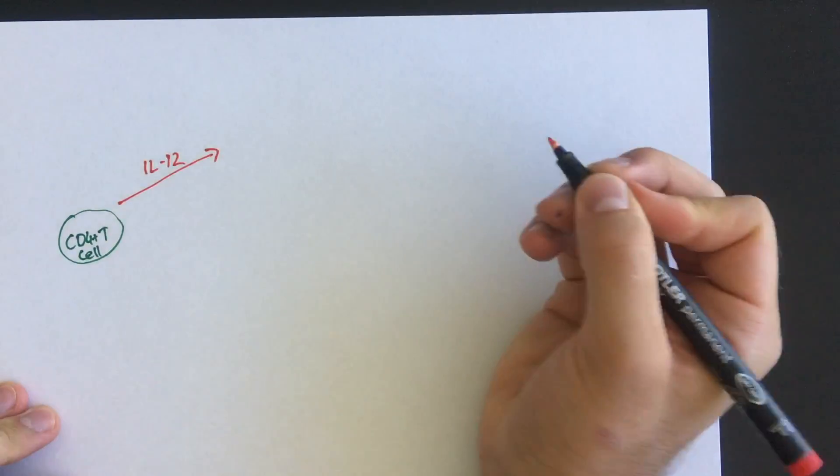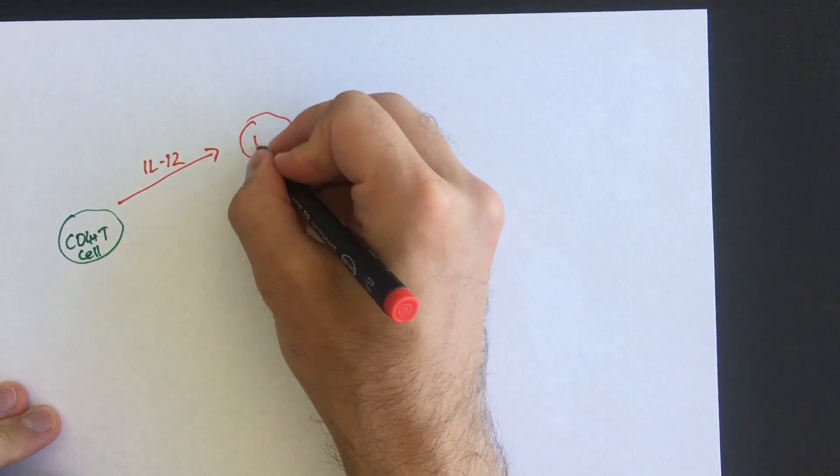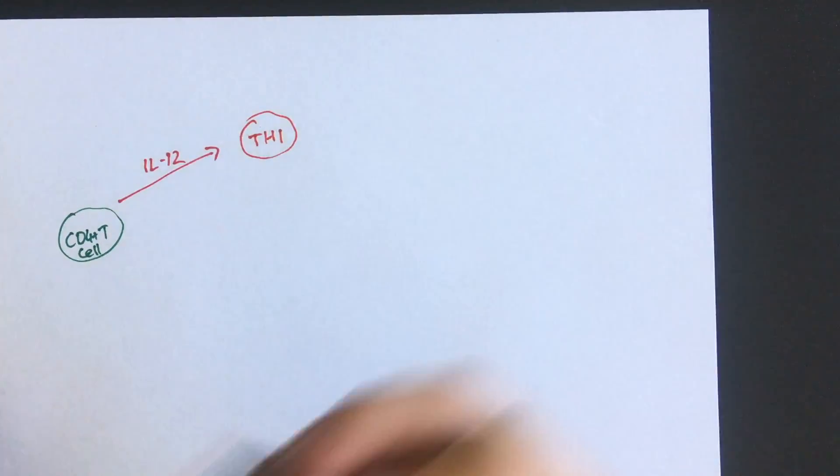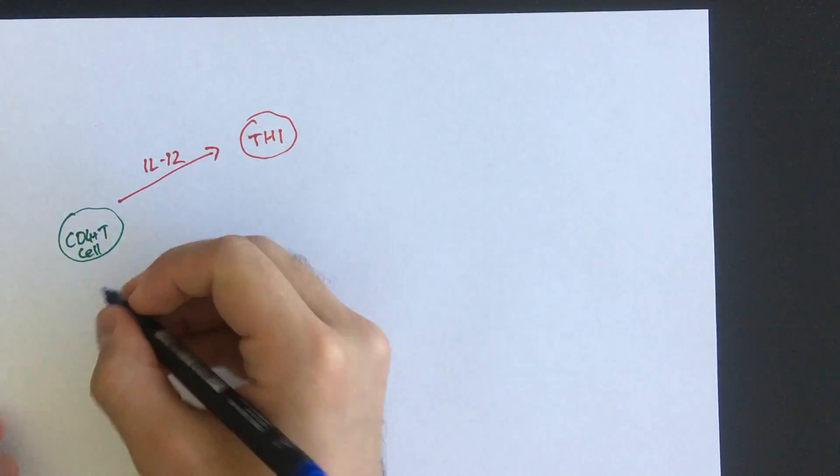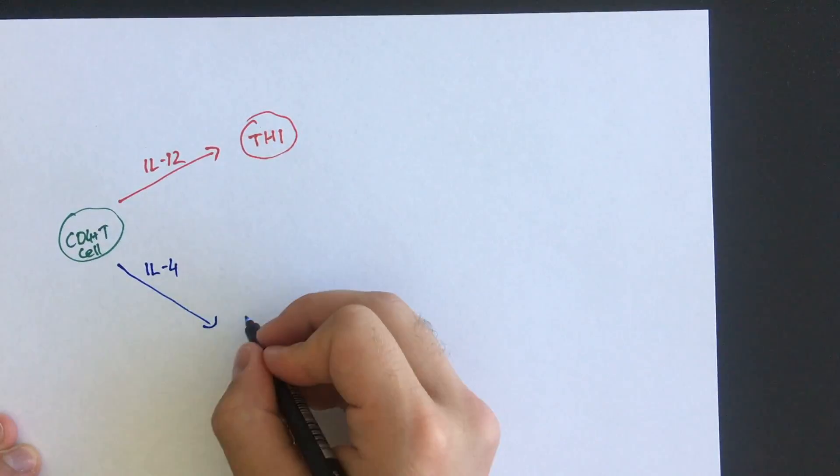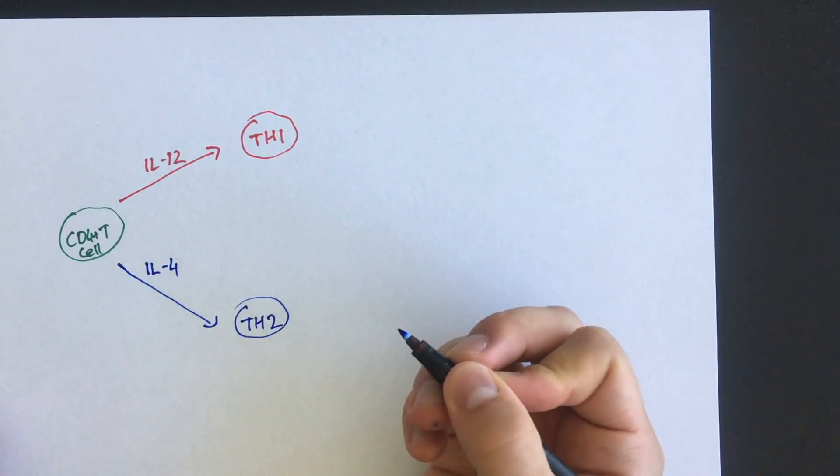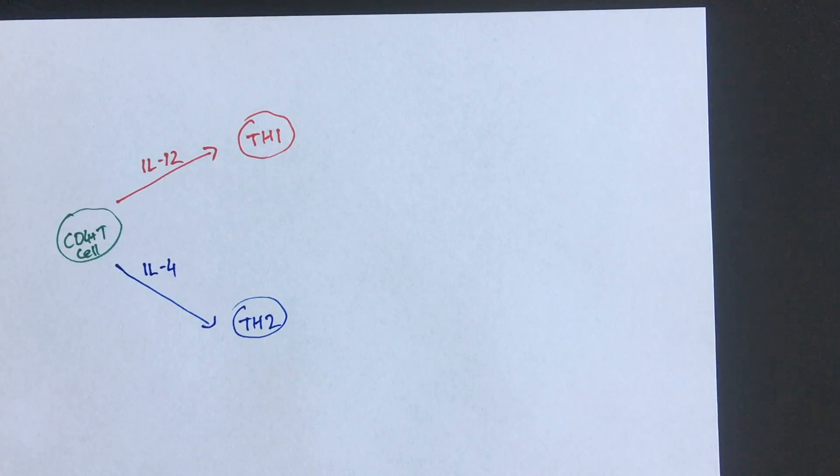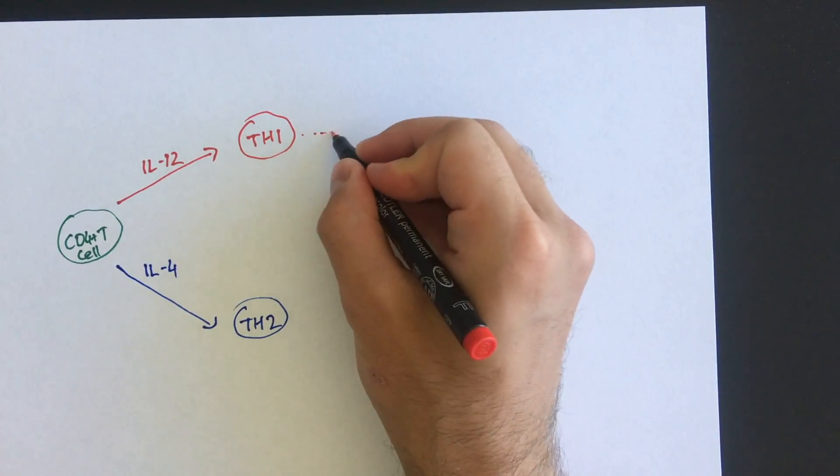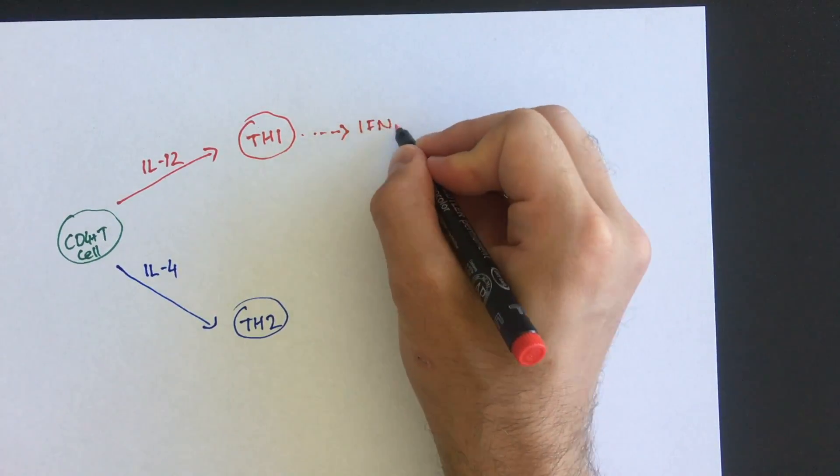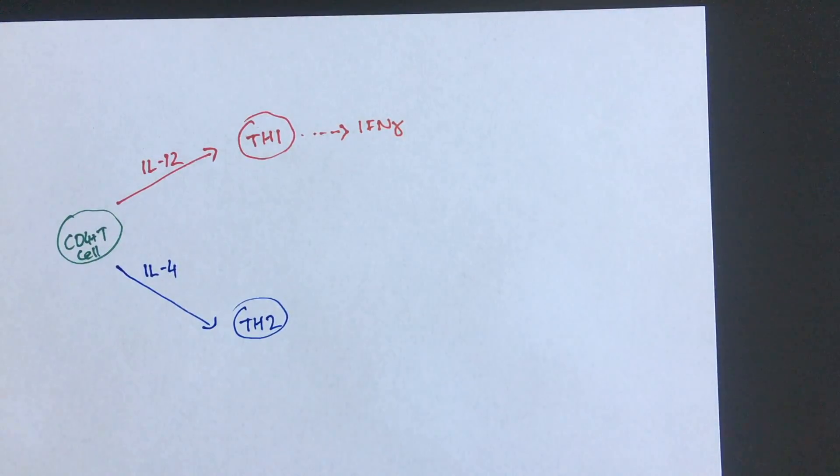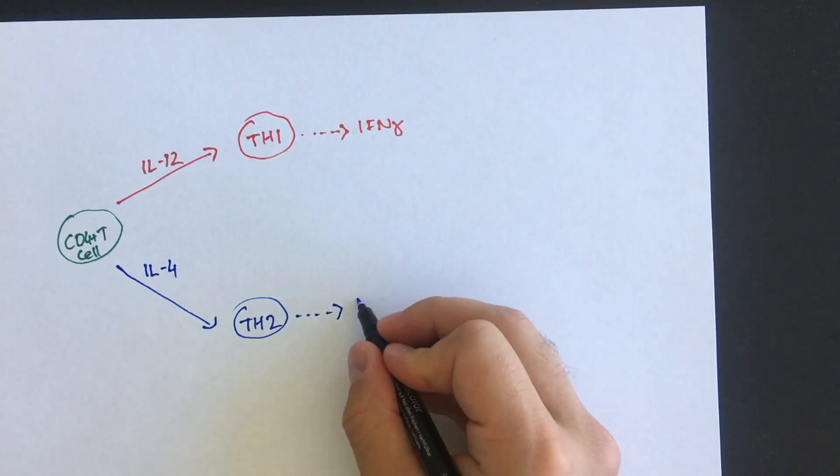If interleukin-12 is released, this causes CD4 positive T cells to differentiate into T helper 1 cells. But if interleukin-4 stimulates the T cell, they will turn into TH2 cells. The TH1 cell will itself produce interferon gamma. The TH2 cell will itself produce interleukin-4.